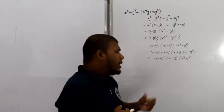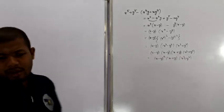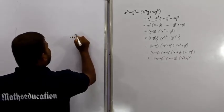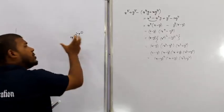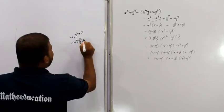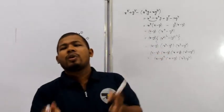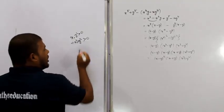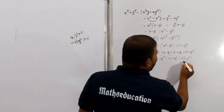We observe that since x and y are positive quantities, x plus y is greater than zero, and x squared plus y squared is also greater than zero. So the product x plus y into x squared plus y squared is a positive quantity.